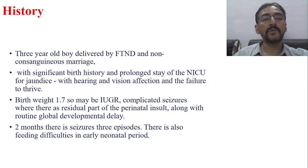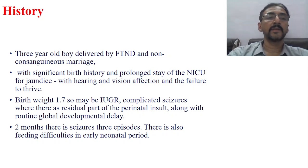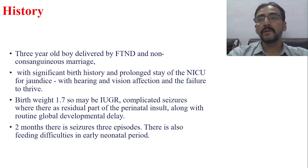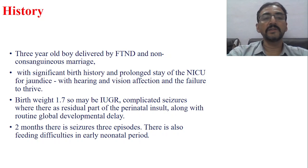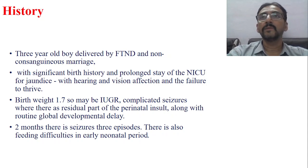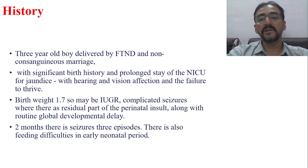This is a case of a three-year-old boy delivered by full-term normal delivery from a non-consanguineous marriage. The birth history is very significant — there is history of birth asphyxia, prolonged stay in the NICU for jaundice, hearing and vision affection, and failure to thrive.